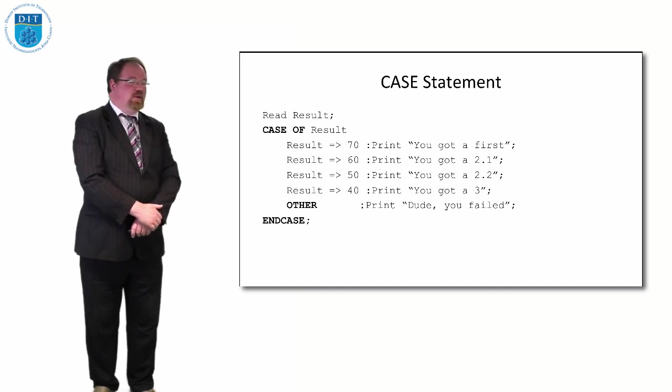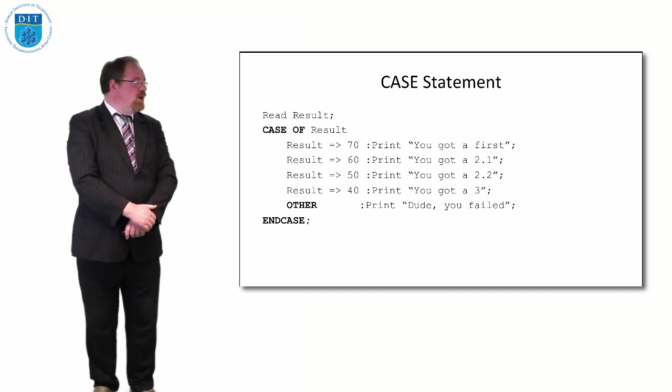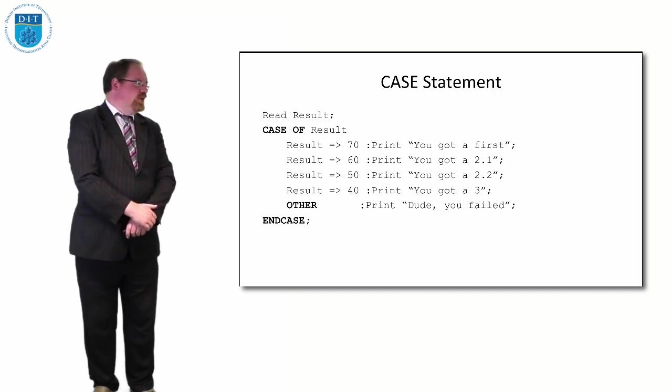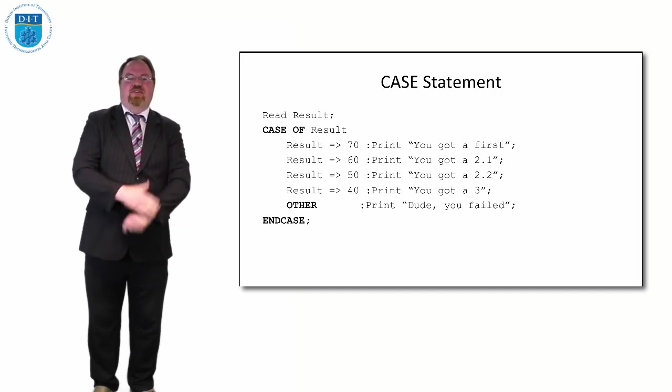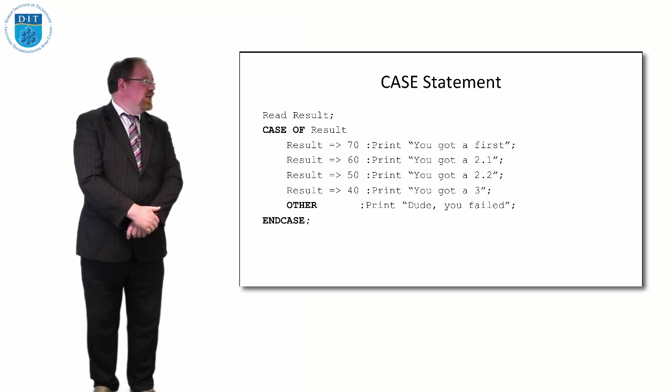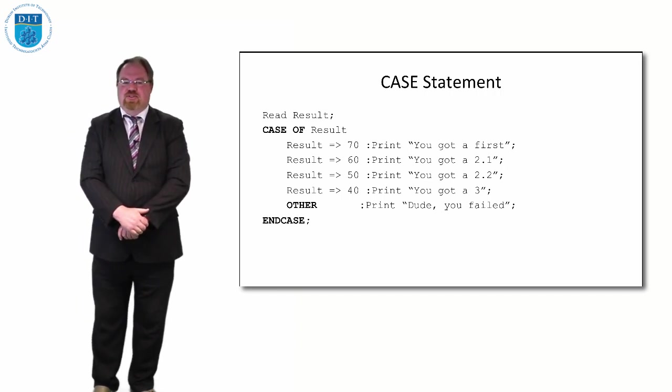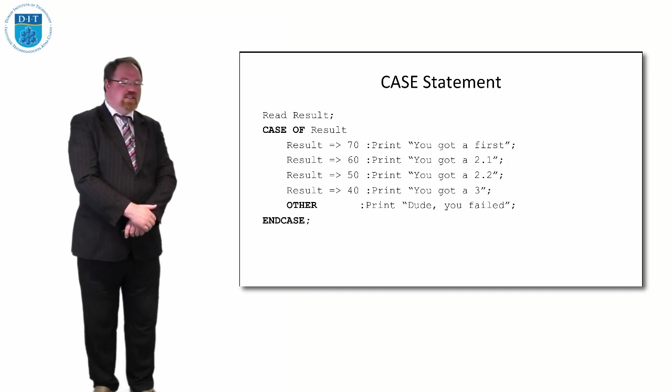Let's say I wrote a program where I knew what percentage results you got and I want to know what grade that is. In our courses, if you get over 70 it's a first, if you get between 60 and 69 it's 2.1, 50 and 59 is 2.2, and 40 to 49 is a third, less than 40 is a fail.